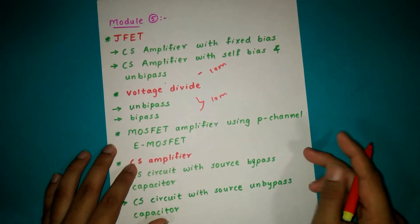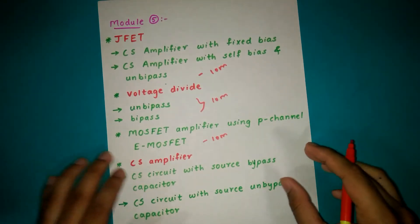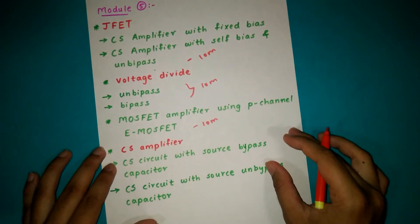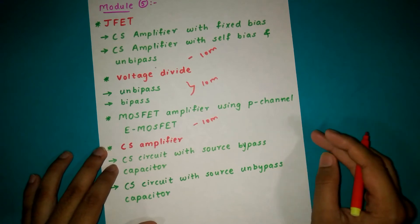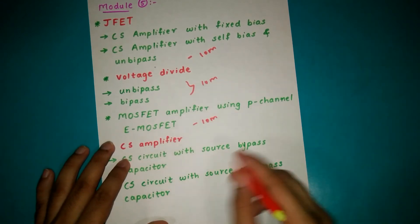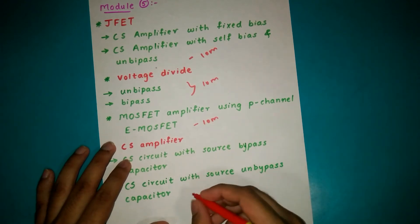MOSFET amplifier using P-channel E-MOSFET - this you will get as a confirmed question for 10 marks. From CS amplifier, CS circuit with source bypass capacitor, CS circuit with source unbypassed capacitor - from this you will get one of the questions for 10 marks or both the questions for 20 marks.